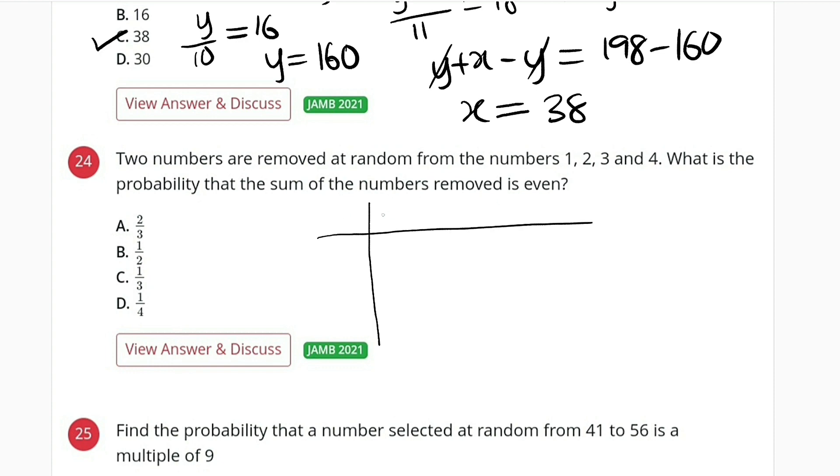We may have 1, 2, 3, 4 here and 1, 2, 3, 4 here. Combination of 1 and 1 here, combination of 1 and 2, 1 and 3, 1 and 4.